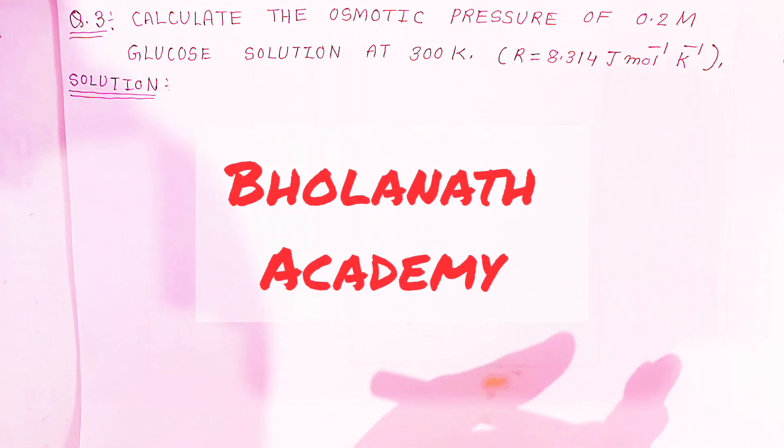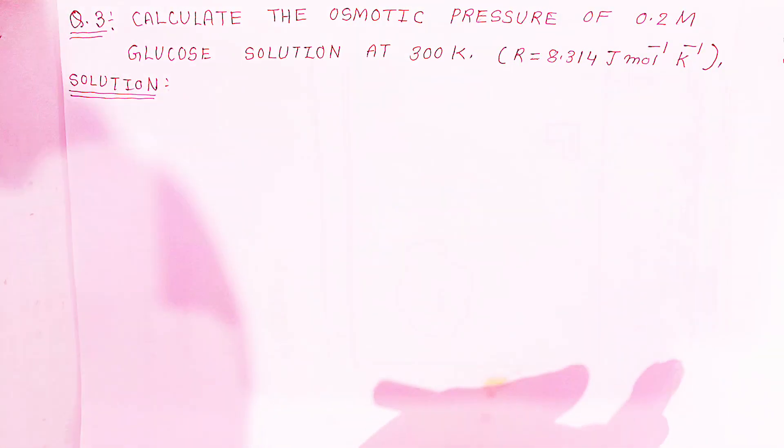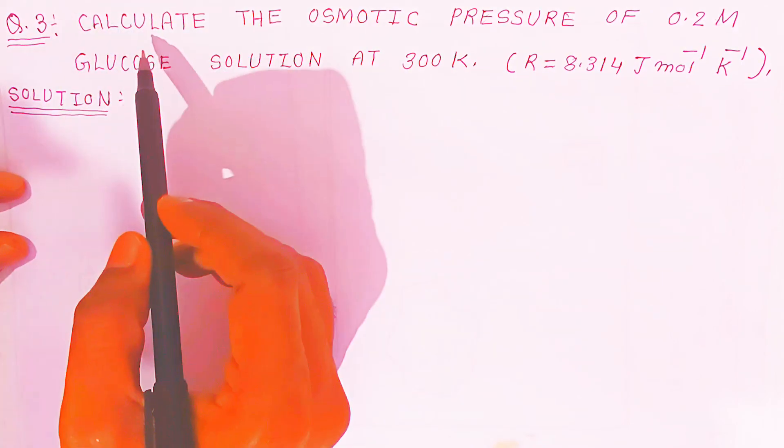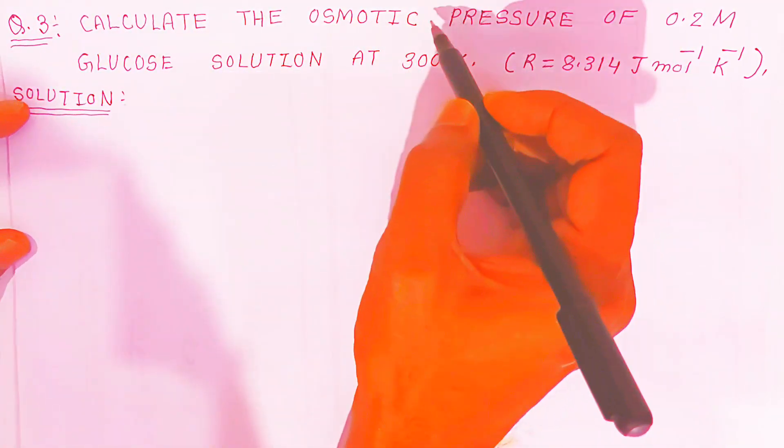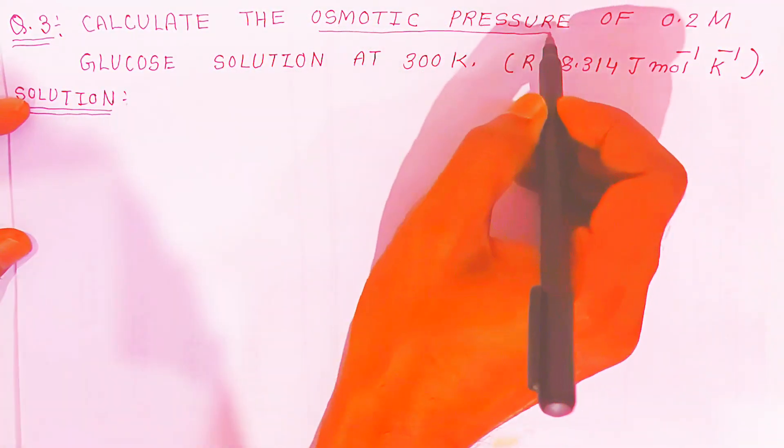Hello students, once again welcome to Bholanath Academy. In this video we are going to see problem 3. We have to calculate the osmotic pressure, that is we are going to calculate the value of pi.